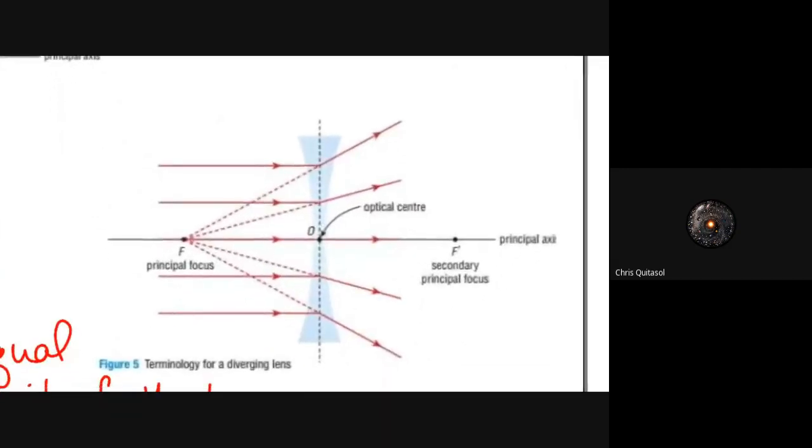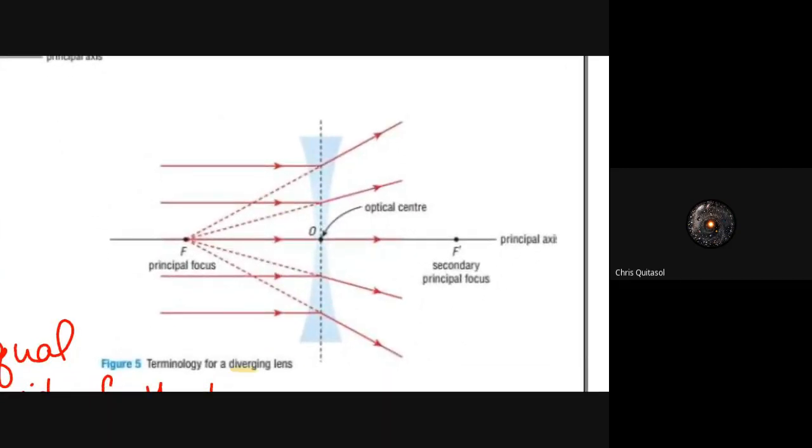Likewise, with diverging lenses, when we look at those incident rays traveling parallel to the principal axis, the rays will diverge away and will not converge or meet anywhere specifically. However, if you look at those imaginary rays, those dotted lines, you'll note that they all still converge on the principal focus. So the principal focus still does play a role in diverging lenses. You just have to remember about those virtual or non-reflected or refracted rays.